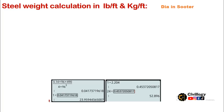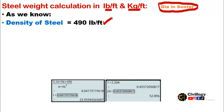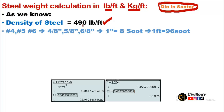Now let's proceed to the next two formulas: lb per feet and kg per feet in the FPS (foot-pound-second) system. It is pertinent to mention that the diameter for these two formulas should be in sutra. In the FPS system, the density of steel is 490 lb per cubic feet.